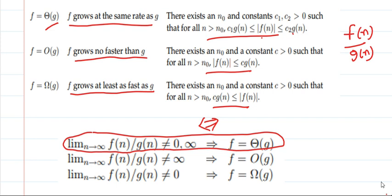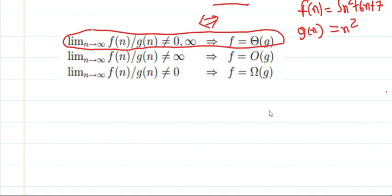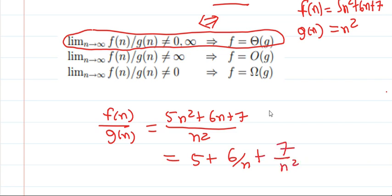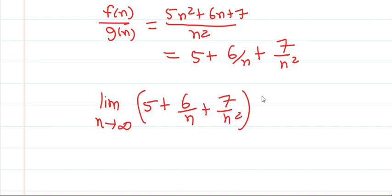Let me take one example to make this clearer. Let's say f(n) = 5n² + 6n + 7 and g(n) = n². I want to apply the limit definition, so let me find f(n) / g(n). In this case it's (5n² + 6n + 7) / n². If I simplify this further, I get 5 + 6/n + 7/n². Now applying the limit as n tends to infinity — we consider large values of n — the answer is 5.